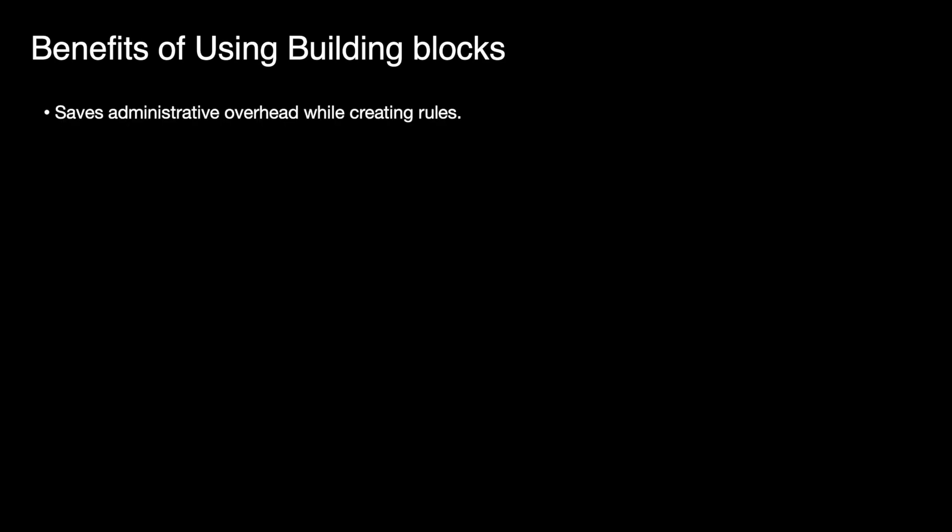There are certain benefits we can get when we use building blocks. It saves a lot of administrative overhead while creating multiple similar rules, since you can simply use the same building block instead of adding and configuring all the tests again in every rule. It also helps to maintain the rules. For example, if you change the IP address of a DNS server in your environment, you can just modify the building block which defines the DNS servers instead of editing every rule which relates to DNS events.